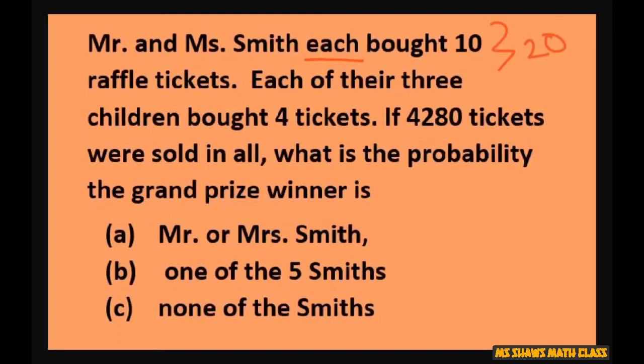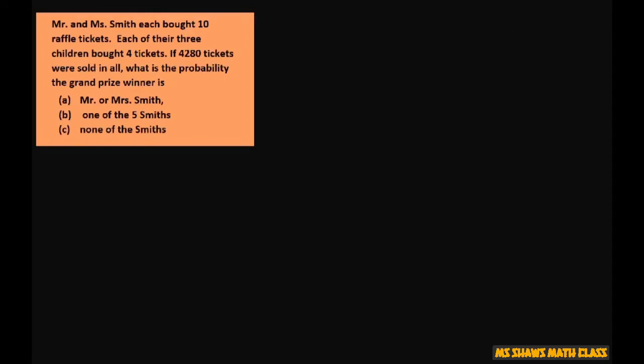And each of their three children bought four. So that would be three times four. If 4,280 tickets were sold in all, what is the probability that the grand prize winner is one of these three? So we're going to answer these questions.